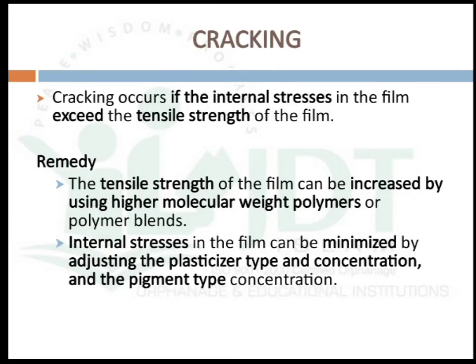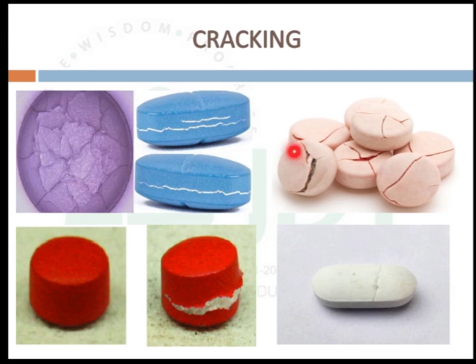The next defect is cracking. This occurs if the internal stress in the film exceeds the tensile strength of the film. It can be rectified by two strategies: either by increasing the tensile strength of the film using high molecular weight polymers, or by minimizing internal stress by adjusting plasticizer type and concentration and pigment type and concentration. This is a picture showing cracking due to defects in tablet coating.